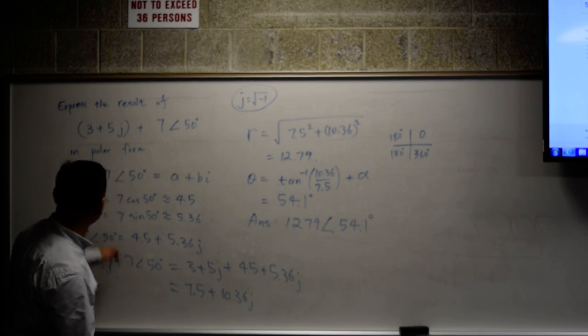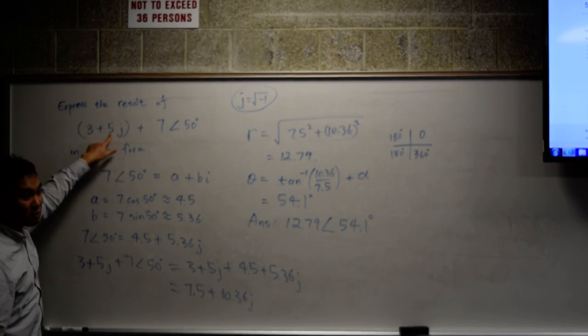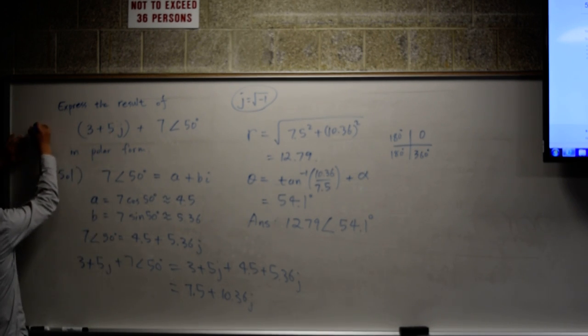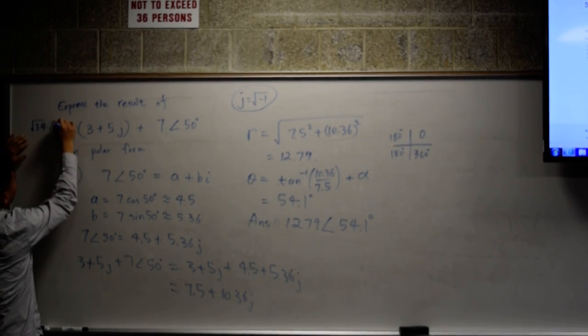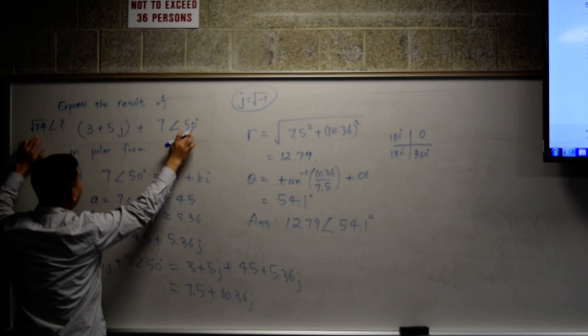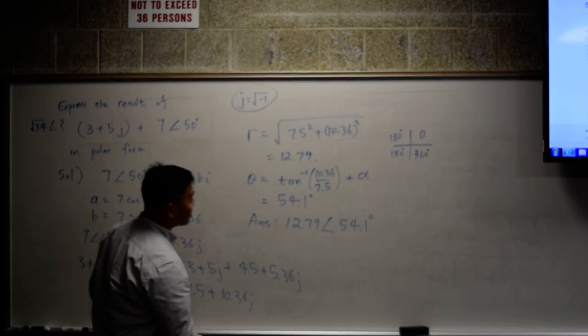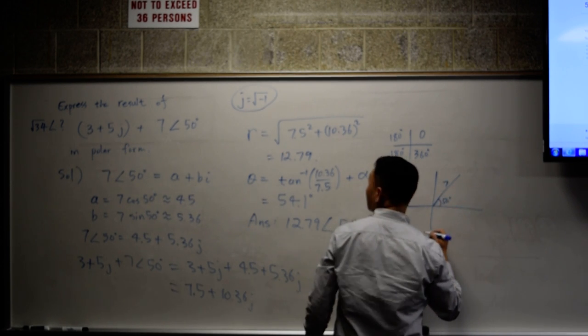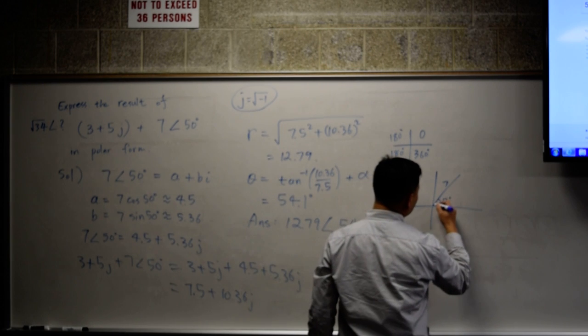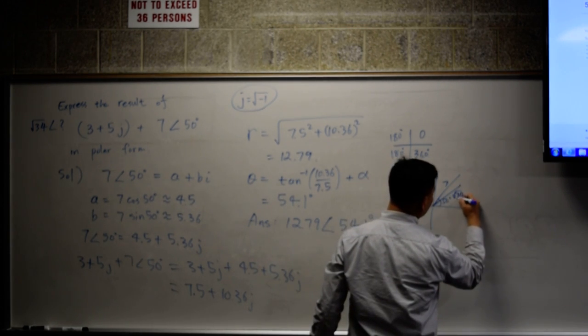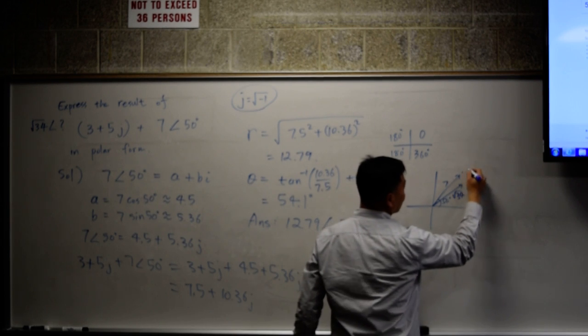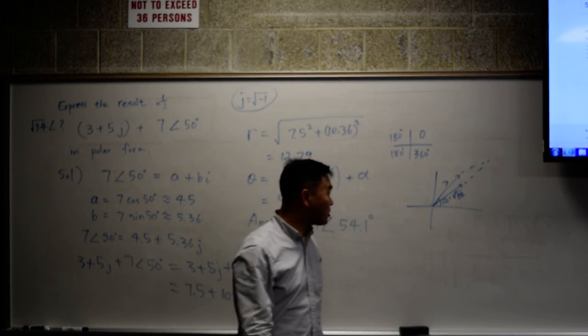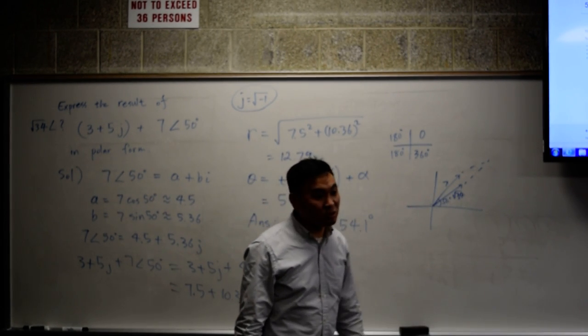The reasoning is this. 3 squared is 9, 5 squared is 25. The square root is 34. So this is like square root of 34, angle whatever. And you're trying to add this to that. If you draw the picture, you have one that's like 7 here, 50 degrees. Another is something similar. And if you add these two vectors, the magnitude is no longer 7 plus square root of 34. It's something less than 7 plus square root of 34. So, it's very hard to do it that way.